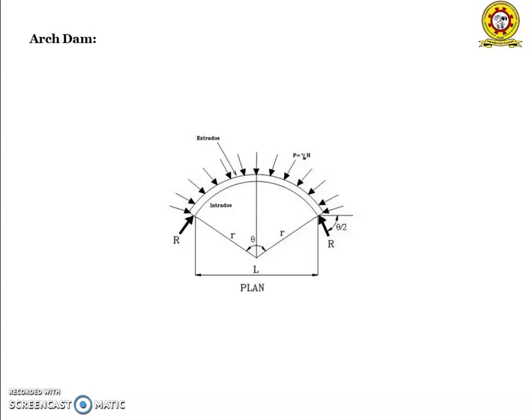In our next session, we will discuss types of spillways, spillways, and other elements of the plants — that is, prime movers, classification of prime movers, draft tubes, and types of power plants. This is the arch dam. If we consider this as a plane, this is the radius inside the arch (small r), and capital R is the radius of the outside of the arch. The angle here is theta, and this angle is theta by 2. The length of the plane is considered in relation to the angle.